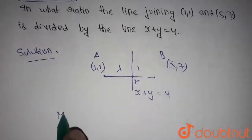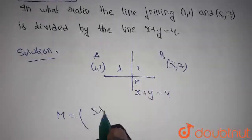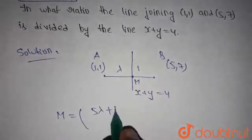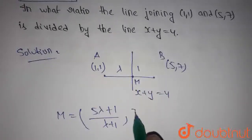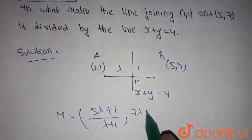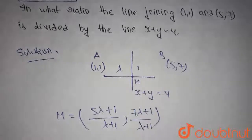Then, point M is given by (5 lambda plus 1) divided by (lambda plus 1) comma (7 lambda plus 1) divided by (lambda plus 1). Since point M also lies on x plus y equals 4,